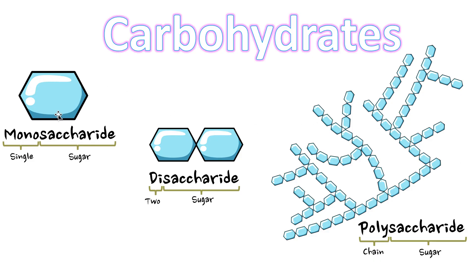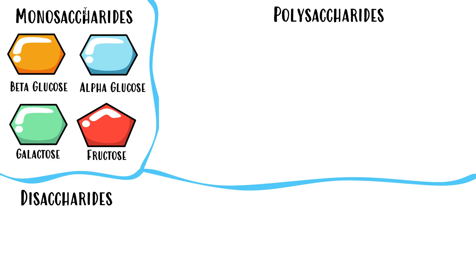There are different kinds of monosaccharides. The blue one I showed you is one kind — it's a type of glucose called alpha glucose. Don't worry about beta and alpha glucose just yet; it'll make more sense throughout this video. There are four kinds of monosaccharides that you need to know.